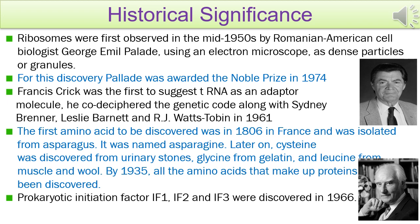When studying cell and molecular biology, one name which is very familiar to us is Francis Crick. Francis Crick was the first person to suggest that tRNA, or transfer RNA, which brings the amino acids for protein translation, acts as an adapter molecule. Francis Crick is also credited for co-deciphering the genetic code along with his fellow scientists Sidney Brenner, Leslie Barnett, and R.J. Watts-Tobin in the year 1961.